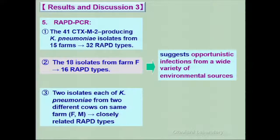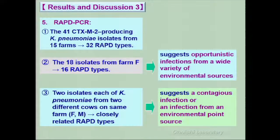Two isolates each of K. pneumoniae from 2 different cows on the same farm showed closely related RAPD types. This suggests a contagious infection or an infection from an environmental point source.